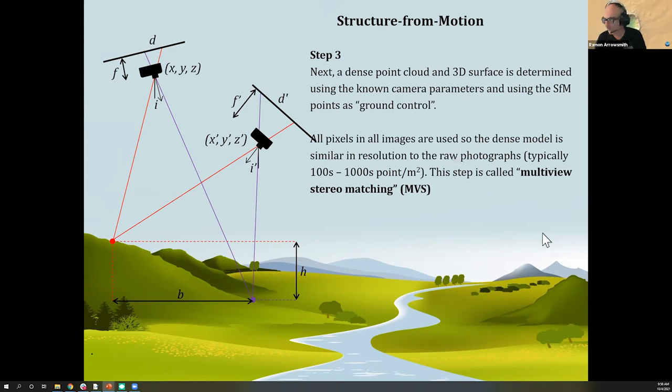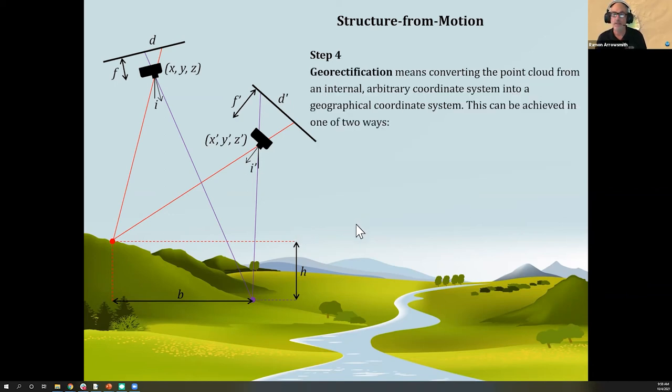A lot of times we do a lot of geoscience on our dense clouds. Step four is the key thing - all of the prior steps have been done in an arbitrary coordinate system, kind of pixel-based. The whole thing has scale that can inflate. Internal relative geometries are excellent, but we don't know where the thing is in space, its orientation, or how big it is. Therefore, we need to geo-reference it.